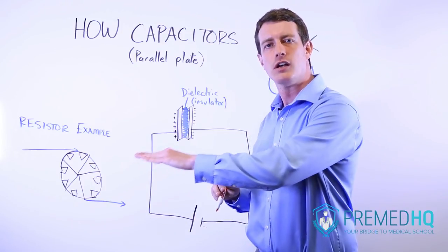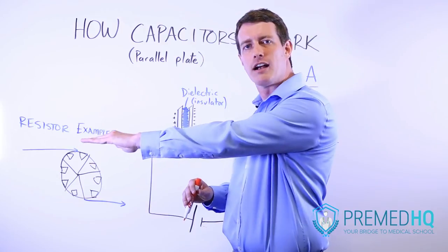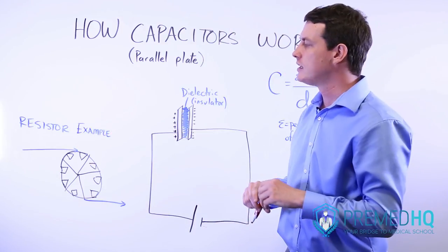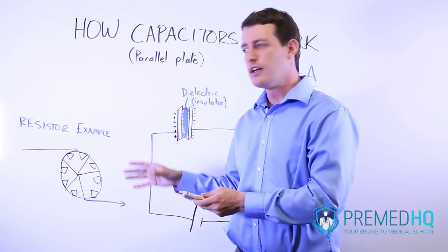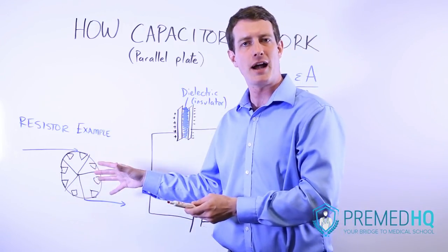The amount of current entering a resistor will be the same as the current leaving that resistor. It's just being used, having some of its potential energy depleted with the resistor for the purpose of generating power.